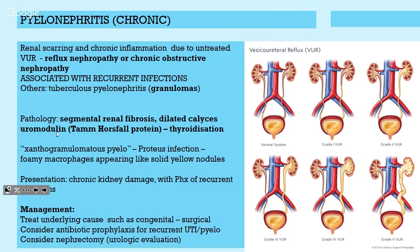Chronic pyelonephritis is just renal scarring from long-term reflux back from the bladder into the kidney, causing damage. Associated with recurrent infections and can involve TB with granulomas. A proteus infection can cause xanthogranulomatous pyelonephritis — yellow macrophages in the kidney that can look like malignancy. Management is treating the underlying cause — in pediatric patients, if there's a congenital valve issue, surgery may fix it. In adults, consider antibiotic prophylaxis, and if the kidney is severely infected, nephrectomy may be required.